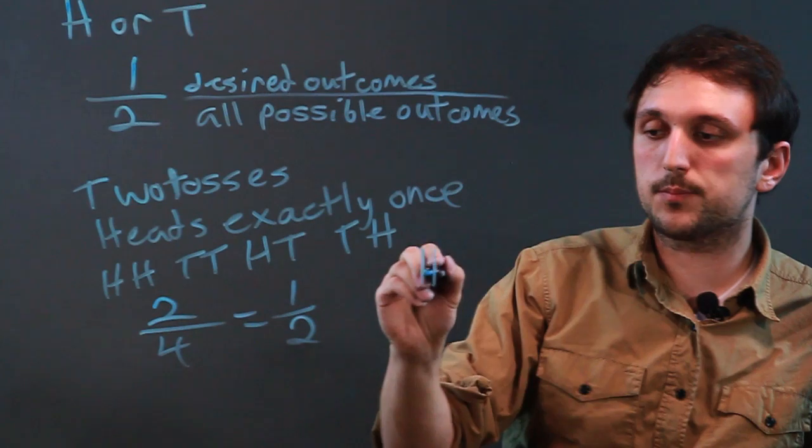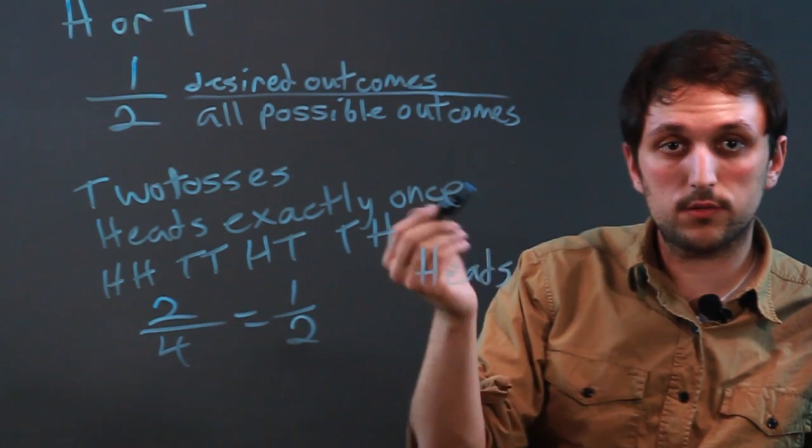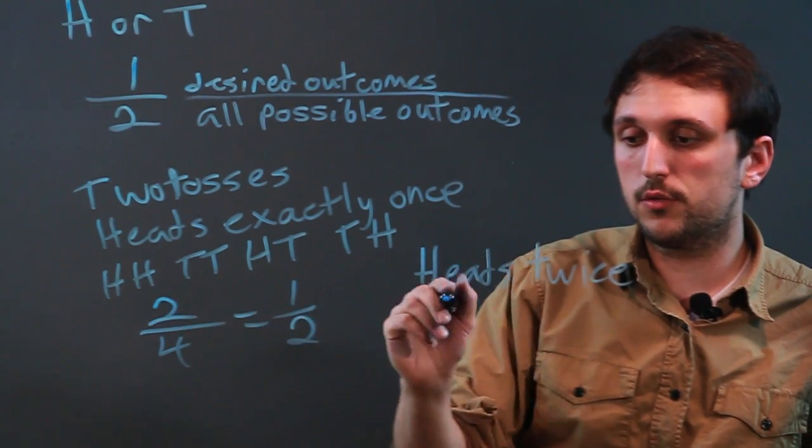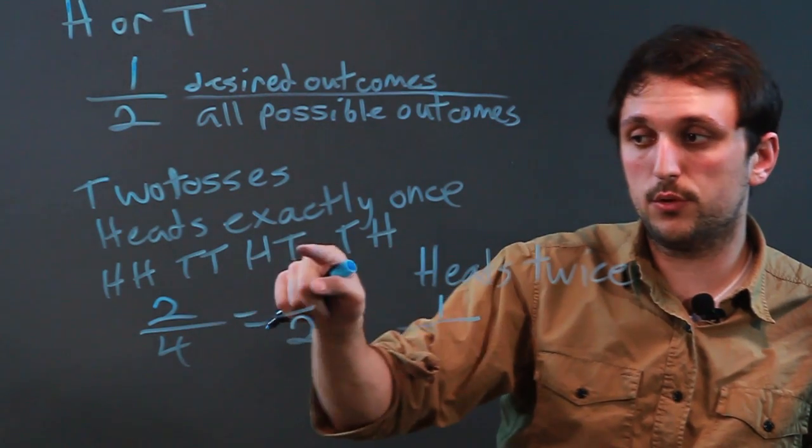If we want heads twice, well going back to this, we only have heads heads. So that's one out of one, two, three, four.